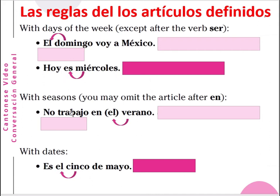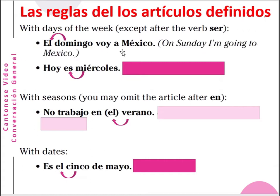More rules on the definite articles. With the days of the week, except after the word 'ser': el domingo voy a México — on Sunday I am going to Mexico. You use 'el' instead of 'en' for the day of the week. But when you say 'today is Wednesday', you don't need 'el' because it comes after the verb 'ser'. Hoy es miércoles — today is Wednesday.